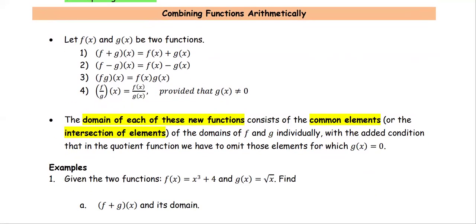Combining functions mathematically — let f of x and g of x be two functions. Number one, f plus g of x is the function f plus the function g at x. f minus g of x is f minus g at x. f times g of x is f of x times g of x. And the last one, f over g of x is the function f divided by the function g at x.